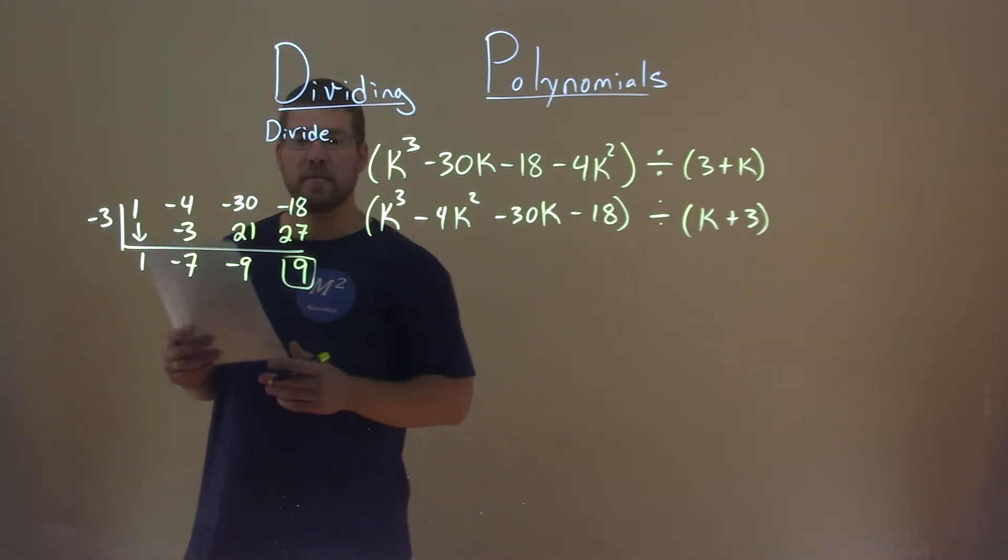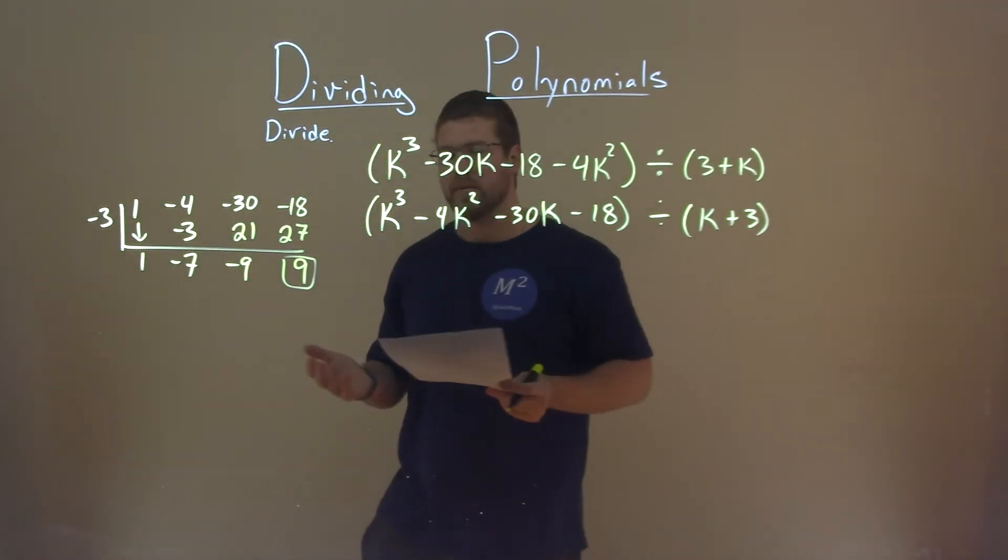Negative 18 plus 27 is a positive 9, and that's our remainder. So now, how do we apply this to be our final answer?